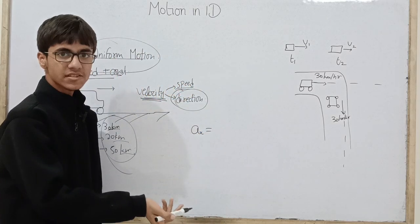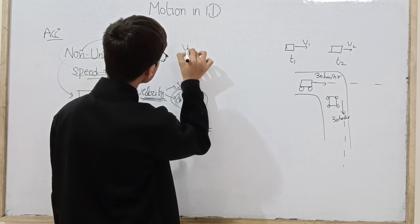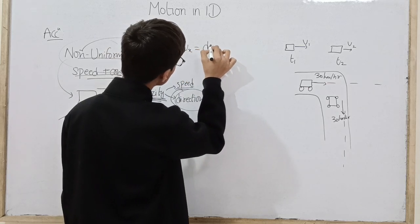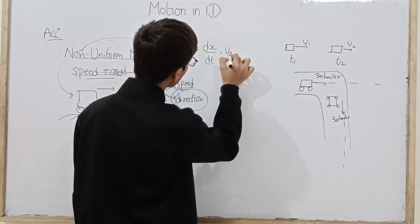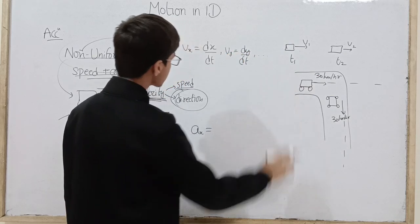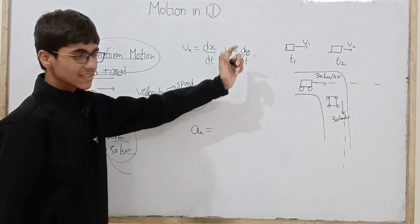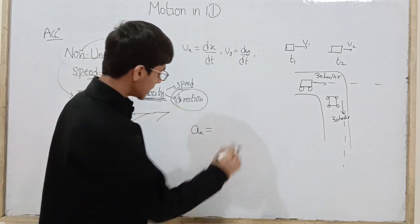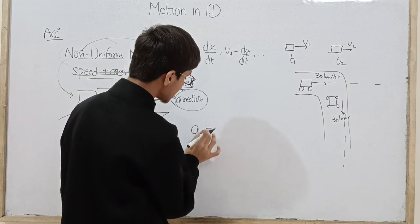Velocity in x direction ki baat karte hain, the rate of change of position in x direction is what, velocity in x direction. Isse ko y mein bhi likh sakte hain, dy/dt and all this thing. In fact just one more term, yahan phir vz equals dz/dt. To agar ab mujhe x direction mein acceleration calculate karna hai and remember first I will talk about average acceleration.